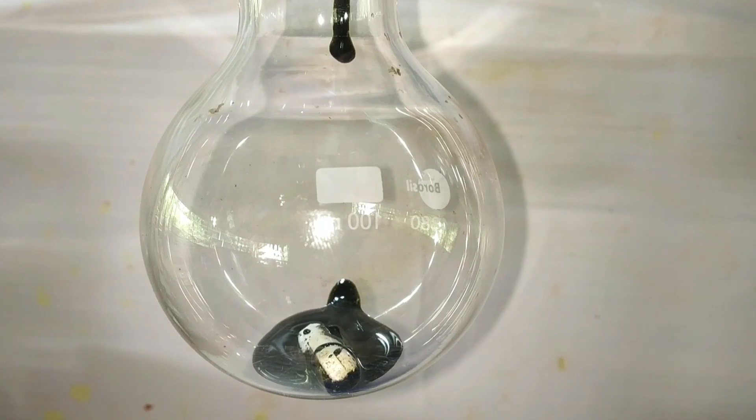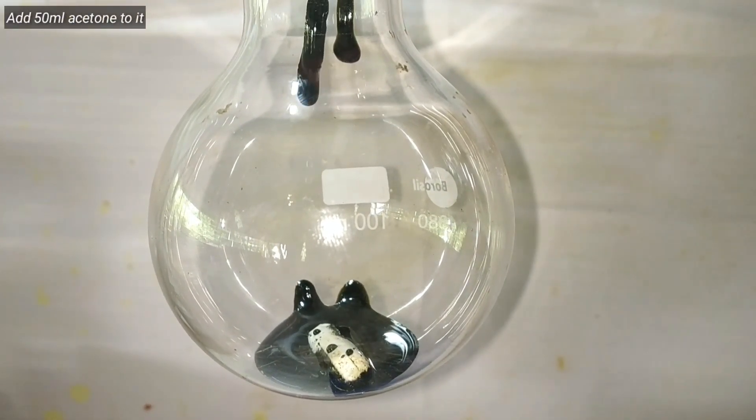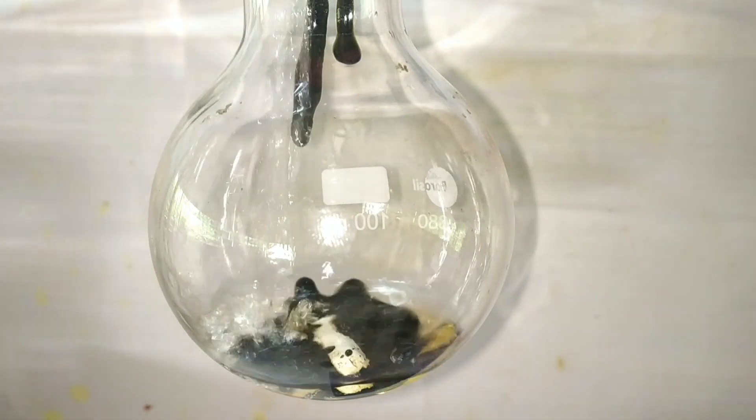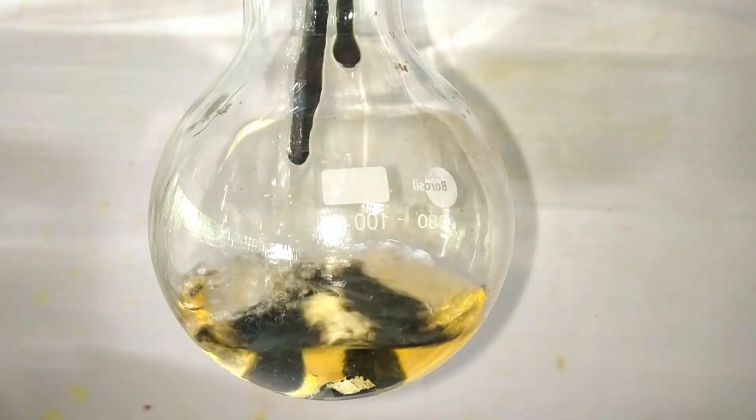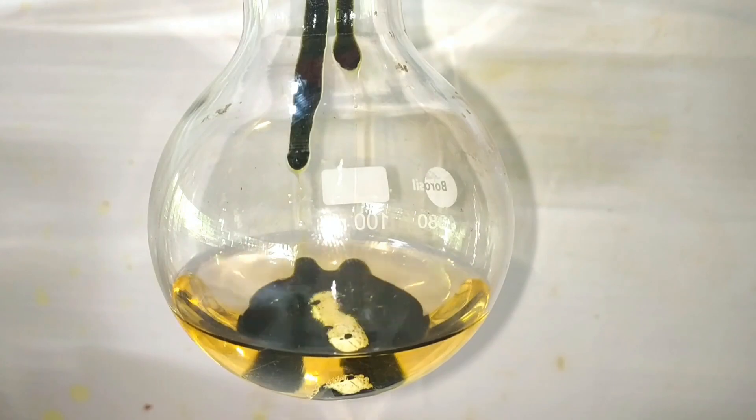This step is actually not necessary but I thought it would be interesting to see the compound forming in the round bottom flask than a beaker. Well, that resulted in a loss of yield. So I would say that you can do this in the beaker itself.